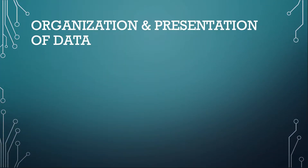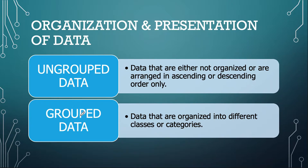When we organize and present data in Statistics, remember that Statistics is a branch of mathematics that deals with the collection, organization, presentation, analysis, and interpretation of numerical data. There are two types of data generally: ungrouped data and grouped data. Ungrouped data refers to data that are either not organized or are arranged in ascending or descending order. Grouped data are data that are organized into different classes or categories.